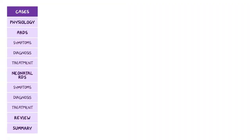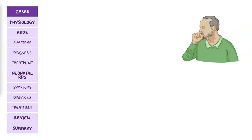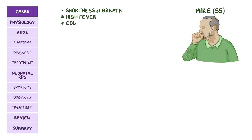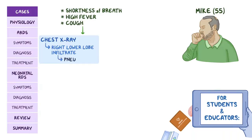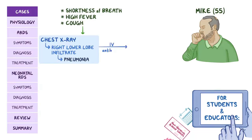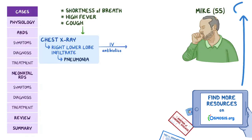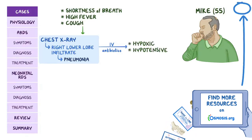Two people are admitted to the emergency department. Mike, a 55-year-old man, presents with shortness of breath, high fever, and cough. A chest x-ray was ordered and showed a right lower lobe infiltrate, which is suggestive of pneumonia. He was then started on IV antibiotics, but the following day Mike became hypoxic and hypotensive.